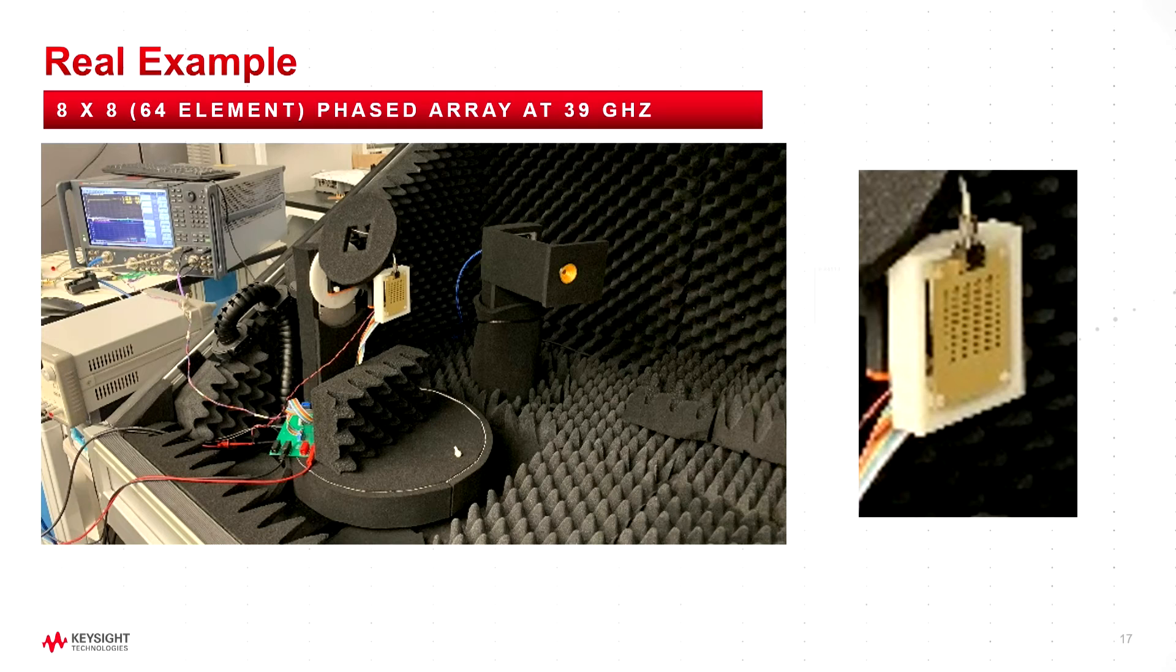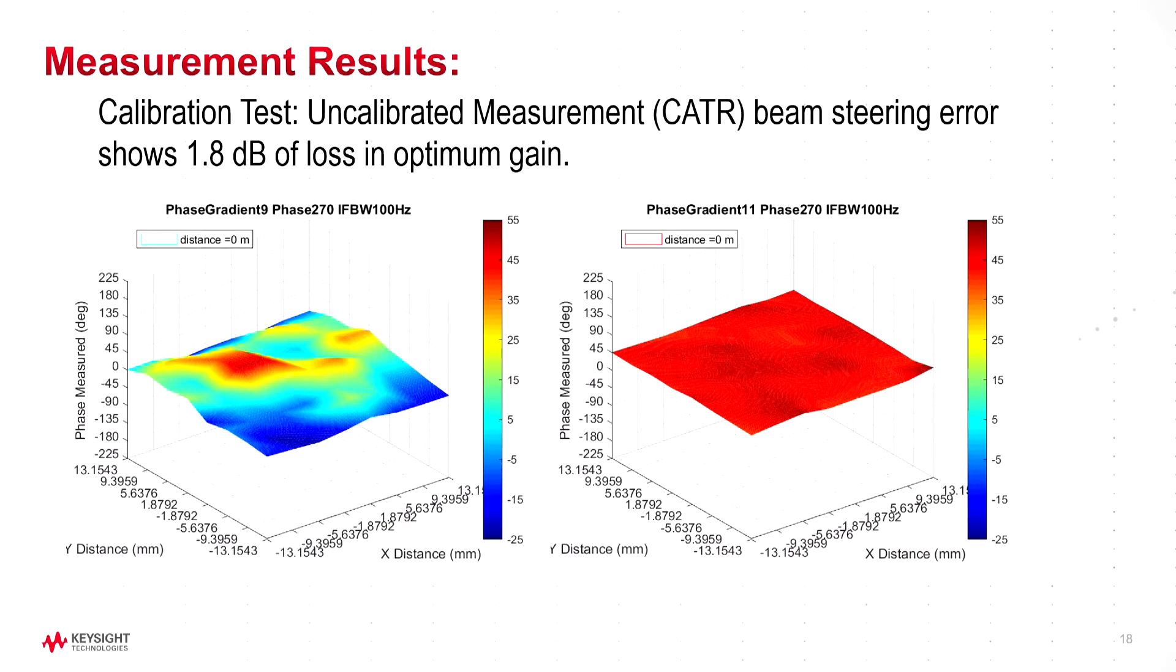So now here's the measurement. This is the same compact range, and I'm looking at this phased array antenna. Here's a close-up. This is an eight-by-eight element phased array antenna. Here's the analyzer connected up to the transmitter and back through the chamber wall to the receiver. One difficulty with phased array antennas is their behavior changes depending if they're calibrated or not calibrated.